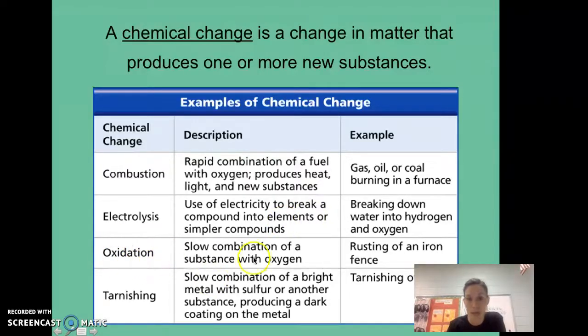Oxidation - we've already talked about the common name for that is rusting, and that happens when you have usually some sort of metal, some moisture in the air, and a combination of the oxygen in the air. Then tarnishing is just a little bit different than oxidation. Tarnishing usually happens to kind of more shiny metal and it's going to mix with the sulfur in the air, and you're going to get a coating on the metal similar to rust.